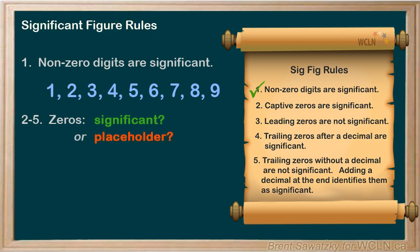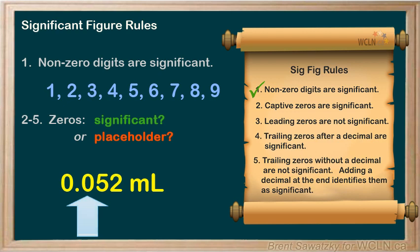For example, if you get a measurement of 0.052 milliliters, we know that the five and the two — the non-zero digits — are significant. Let's think about these zeros. This zero was needed to show that this was a small number, a small amount of milliliters. Having the decimal and this zero is just a practical way of showing a very small number. This zero doesn't make the number any more precise — it's just a placeholder.